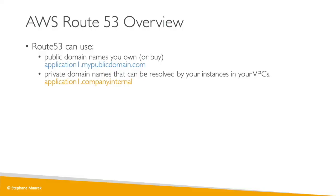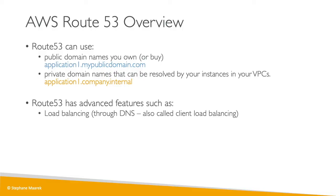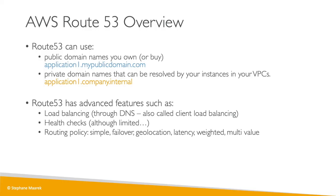Route 53 has many advanced features. There's load balancing through different kinds of records, health checks, and routing policies — including Simple, Failover, Geolocation, Latency, Weighted, and Multi-Value. We'll see all of these in detail in later lectures.